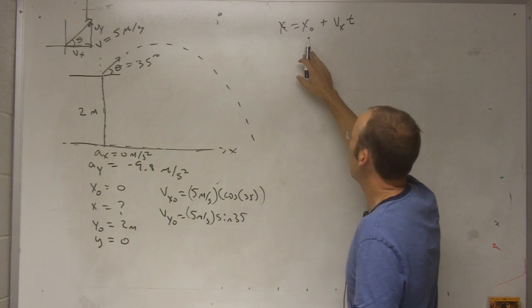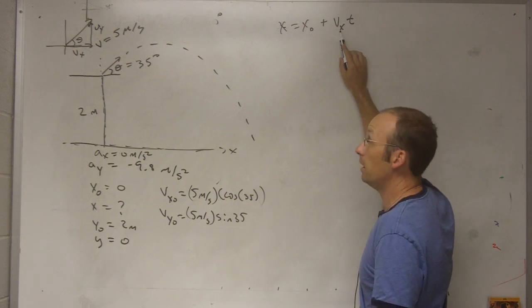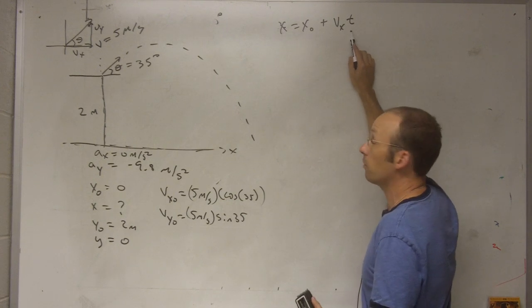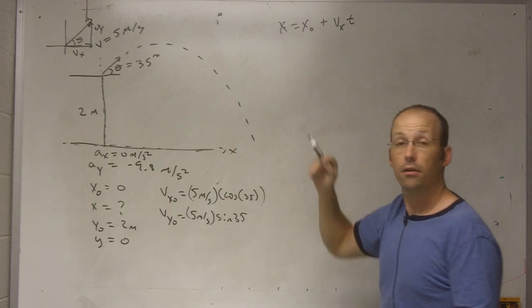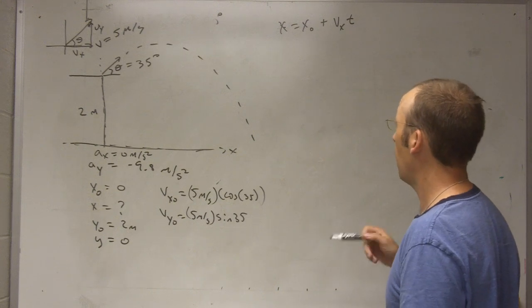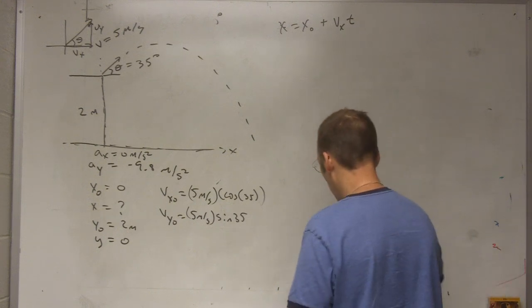Okay, so I know the initial x, I know the x velocity, but I can't find where it lands because I don't know how long it took. Okay, so if I can find out how long, then I can find out how far it went.